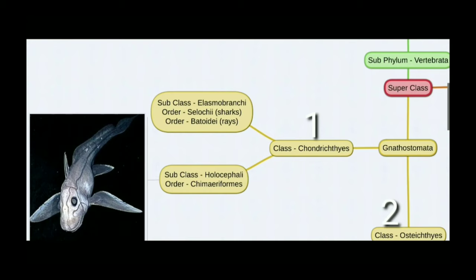Superclass Gnathostomata means jawed vertebrates. There are two classes: Chondrichthyes and Osteichthyes. The major difference is the skeletal system — Chondrichthyes have a skeleton made of cartilage, a protein, while Osteichthyes have a skeleton made of calcium carbonate, which is hard. Another major difference is that Chondrichthyes do not have an air bladder, whereas Osteichthyes do.